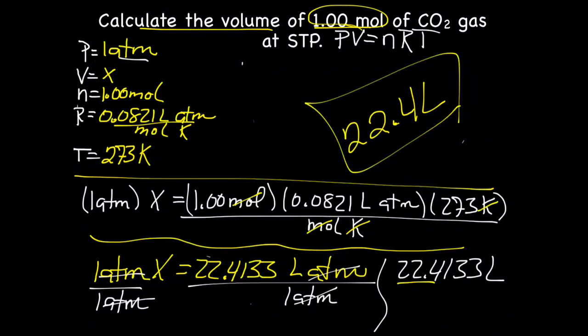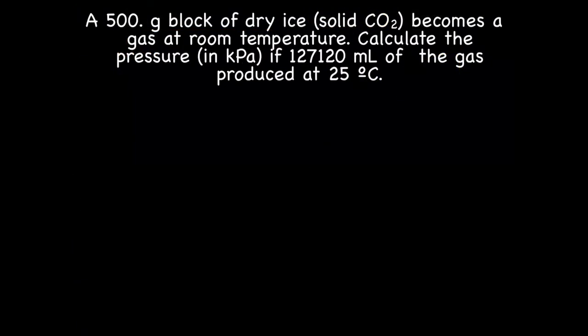So that's how you use the ideal gas law. Let's try another problem. If you think you can do it, go ahead and hit pause and try to do it on your own. Again, we're using the formula PV equals nRT. And let's make a list of the variables. So we've got 500 grams. I don't see mass there, so let's skip that for now.